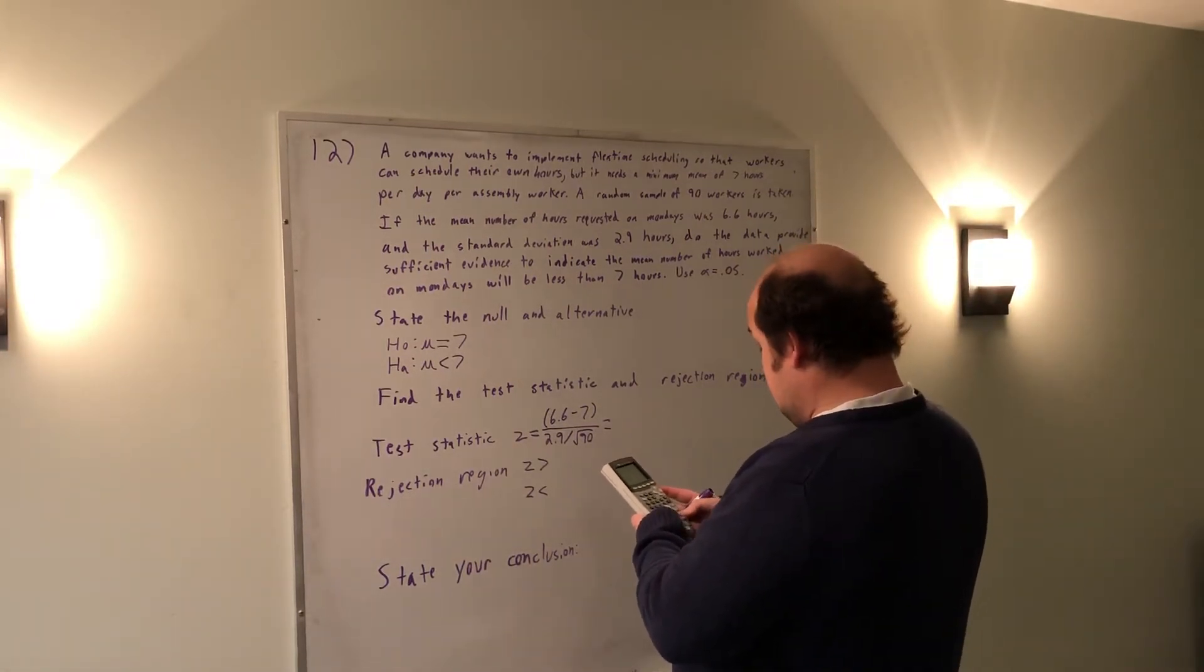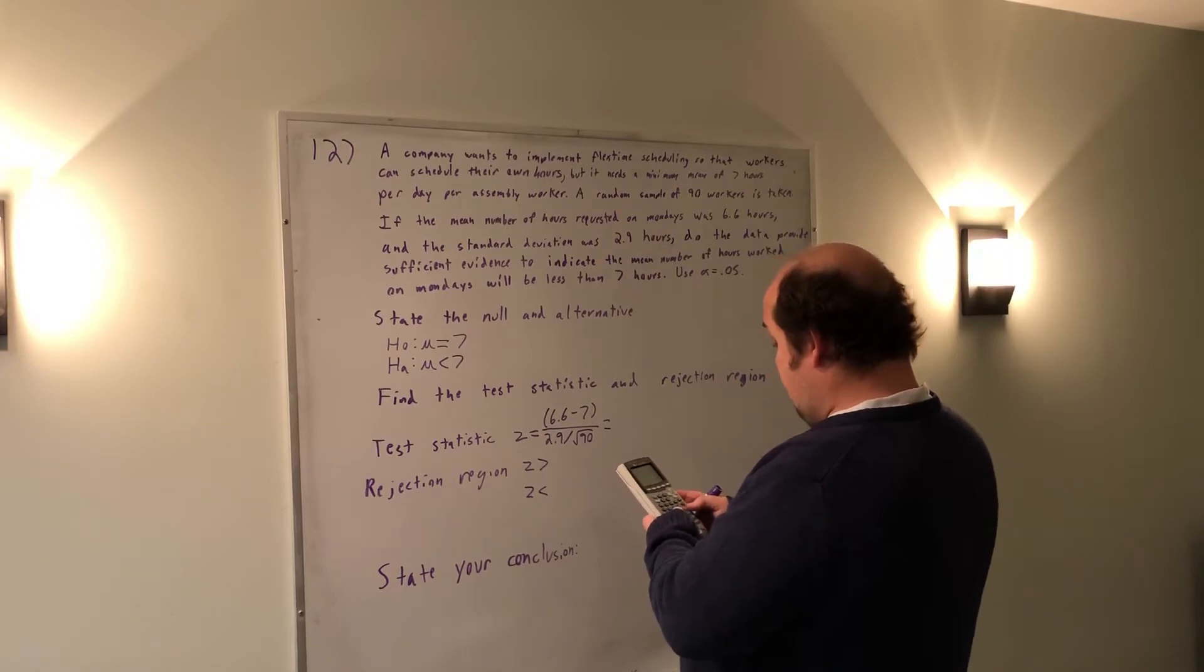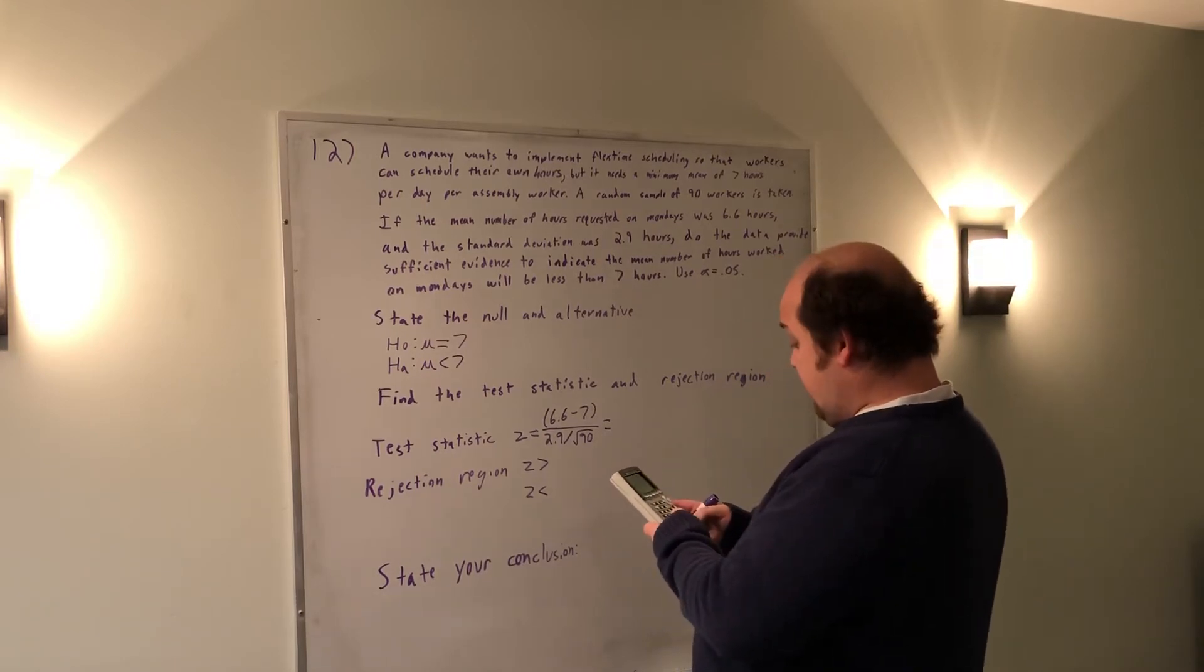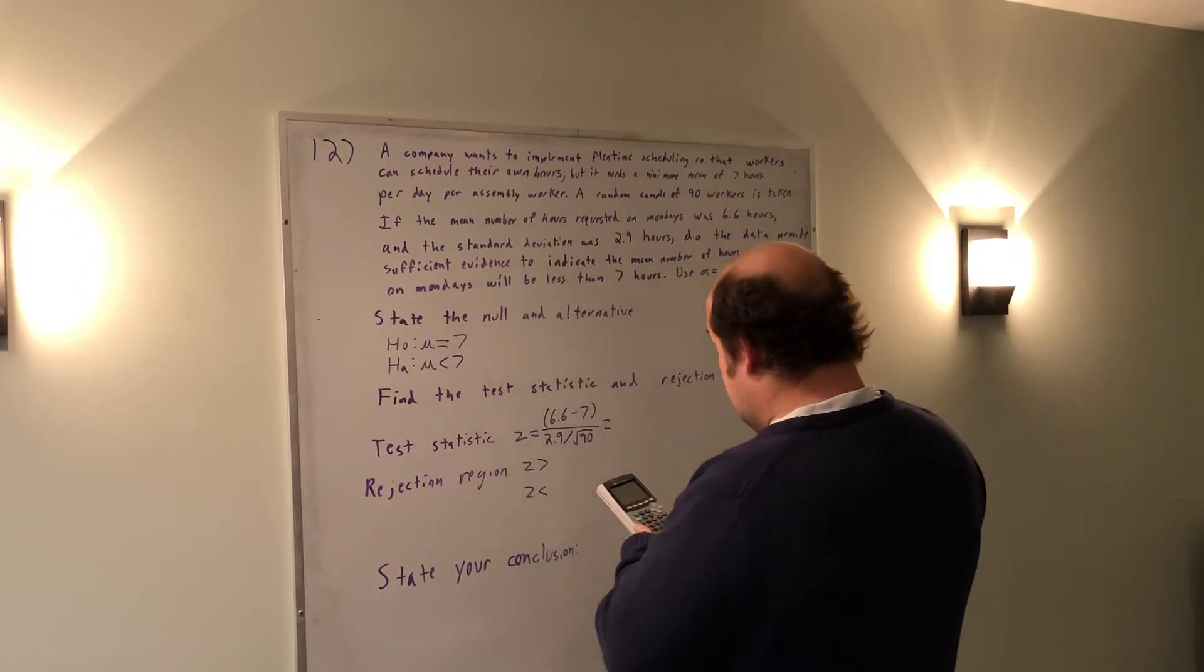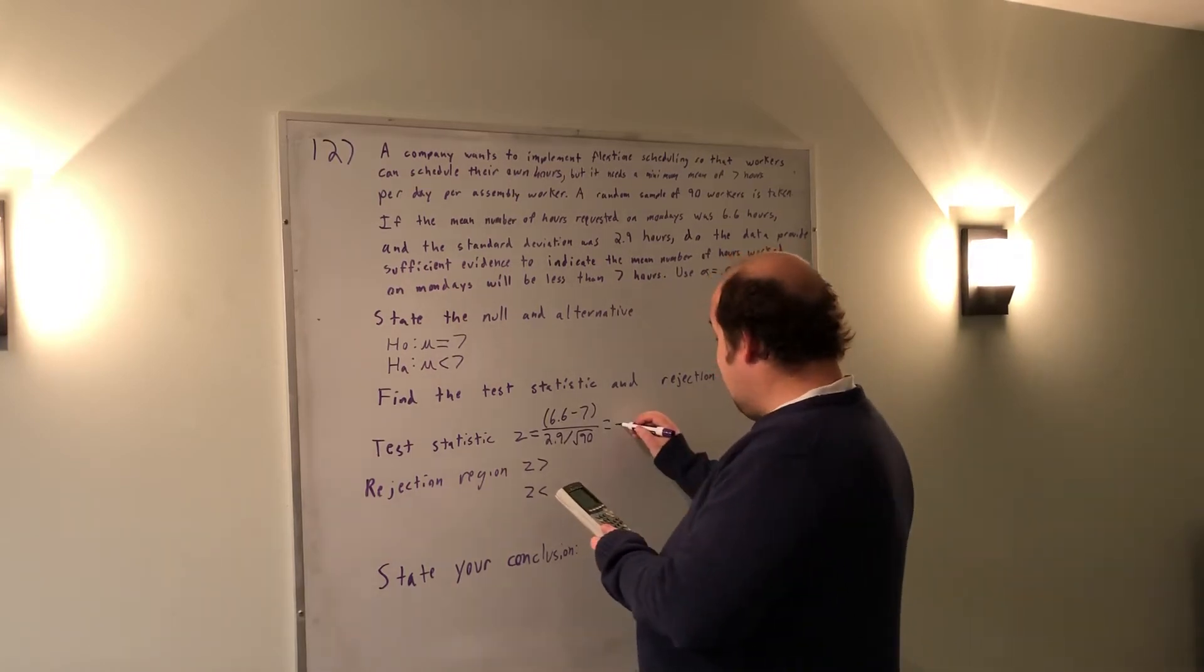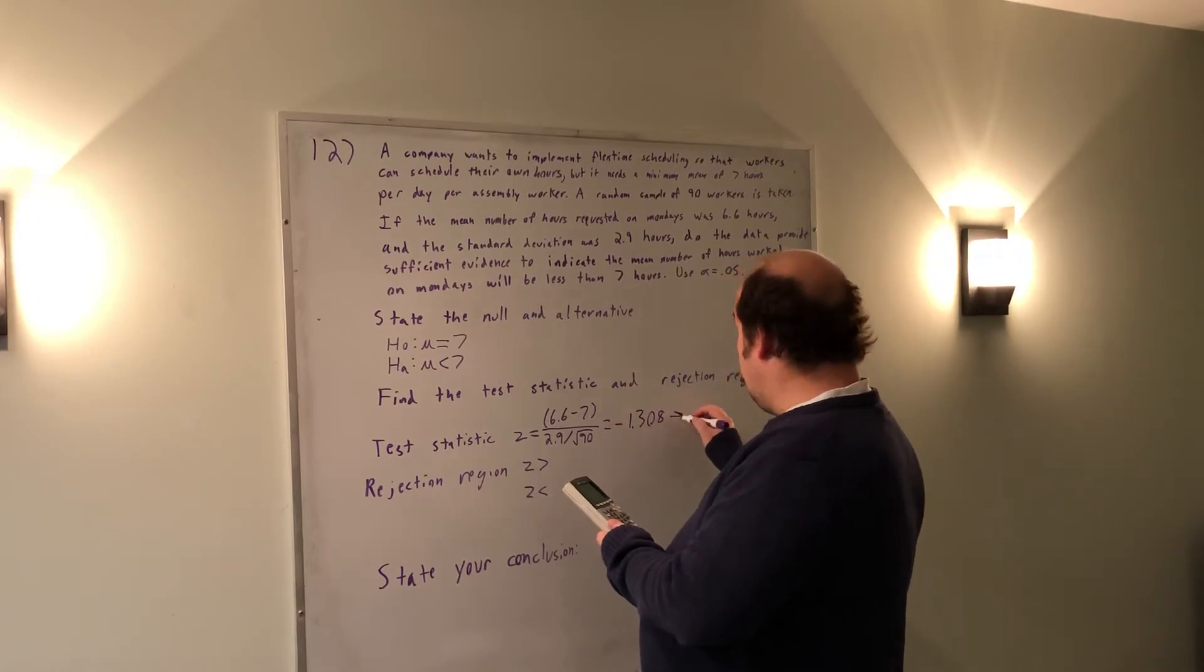When I put this into my calculator, I'm putting in parentheses (6.6 minus 7) in parentheses, divided by new parentheses (2.9 over the root of 90). When I put all that in, I get a z-score of negative 1.308, which I'm going to call negative 1.31.